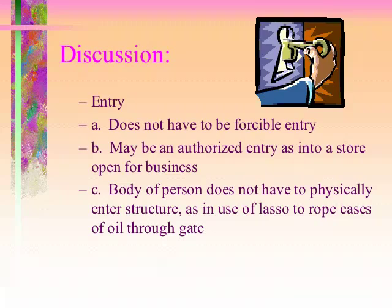Another example would be where the person steals something, runs outside, there's a car waiting, they jump in the back and take off. So there was a plan, and that plan shows premeditation, which shows that they already had the criminal intent before they entered the building.